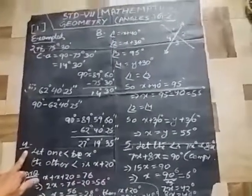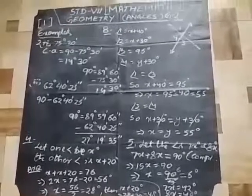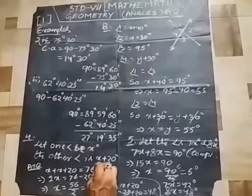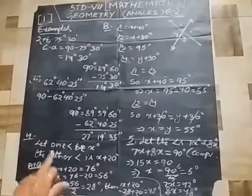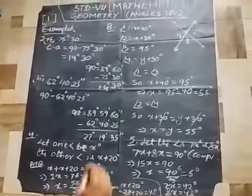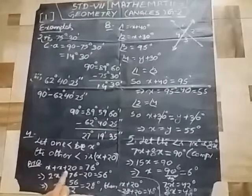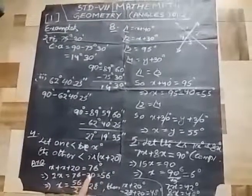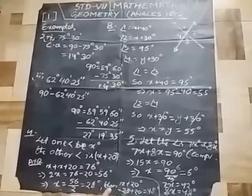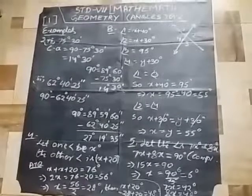Example 4: The sum of 2 adjacent angles is 76 degrees. If one of them measures 20 degrees more than the other, find the angles. Let one angle be x degrees, then the other is x plus 20 degrees. So x plus (x plus 20) equals 76 degrees. Therefore 2x equals 56 degrees, and x equals 28 degrees. The other angle is 28 plus 20, which is 48 degrees.